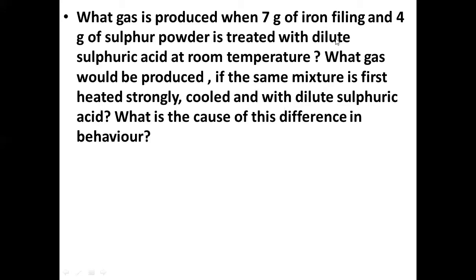What gas is produced when 7g of iron filings and 4g of sulphur powder is treated with dilute sulphuric acid at room temperature? And what gas would be produced if the same mixture is first heated strongly, cooled, and then treated with dilute sulphuric acid? And what is the cause of this difference in behaviour?